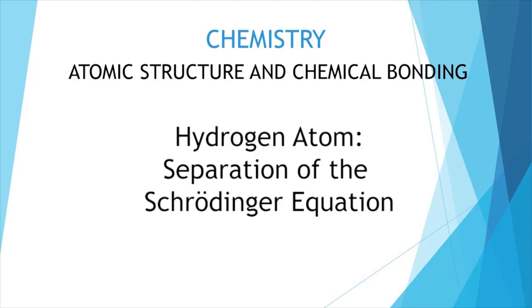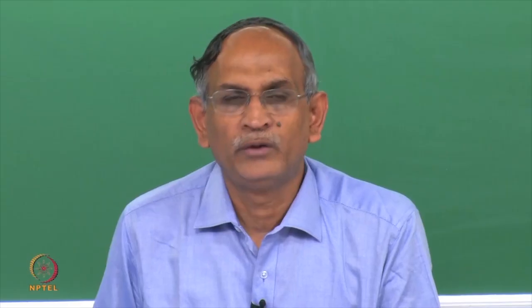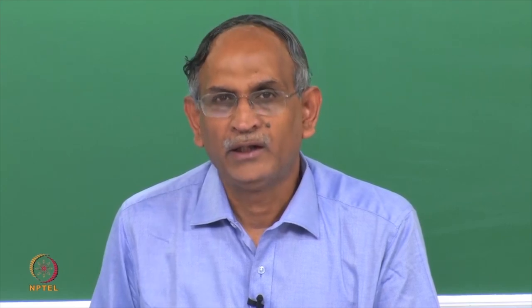Welcome back to the lecture on the hydrogen atom. In the last lecture, we left at the point of the Schrödinger equation being written down using spherical polar coordinates for the hydrogen atom. In this brief segment, I shall tell you how the equation is separated into three component equations for the three variables: the radial coordinate, the theta coordinate of the angular part, and the phi coordinate of the angular part.